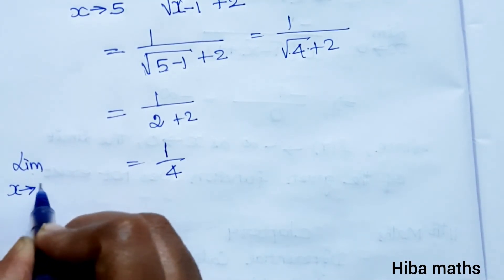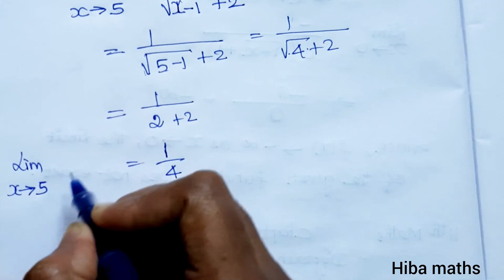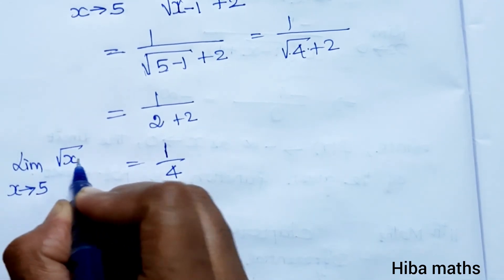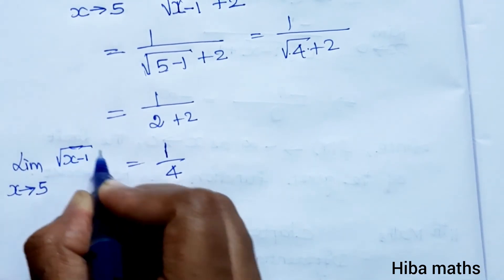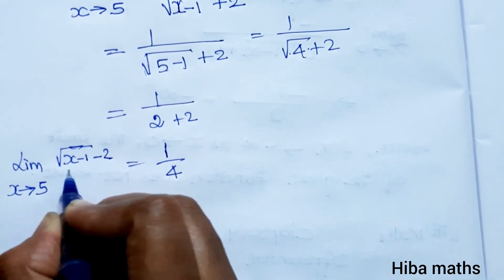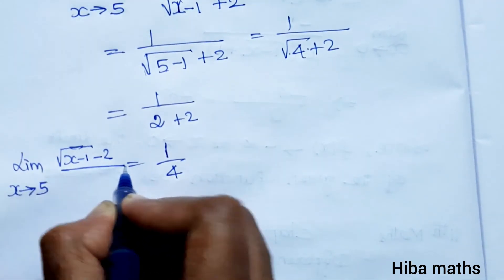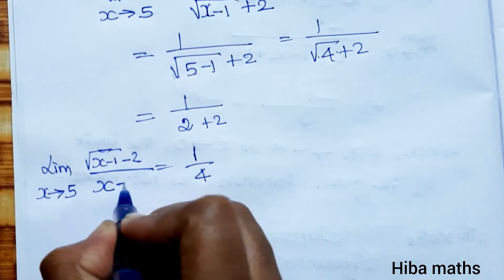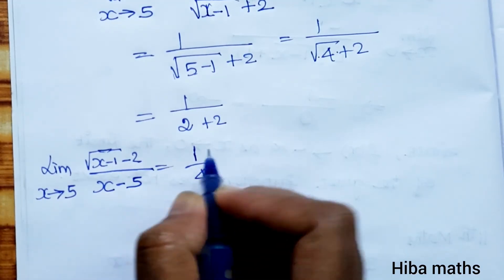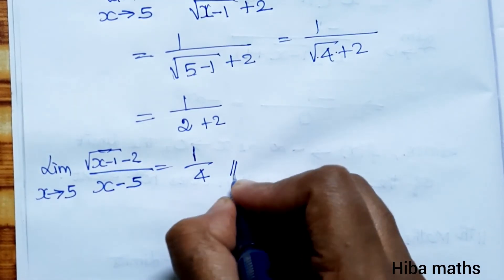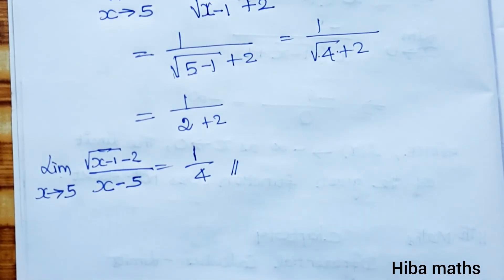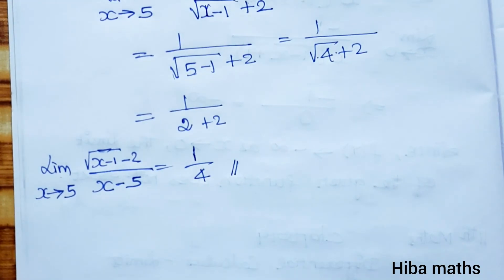Therefore, limit x tends to 5 of [root (x minus 1) minus 2] divided by (x minus 5) is equal to 1 by 4. Thank you so much for watching.